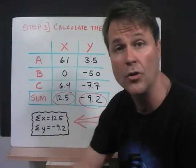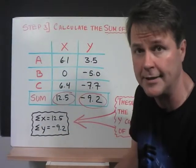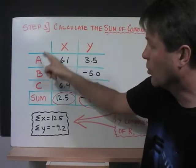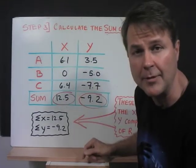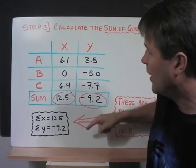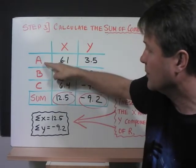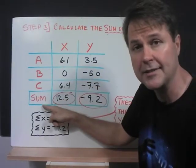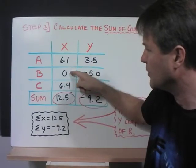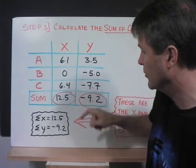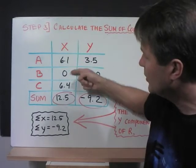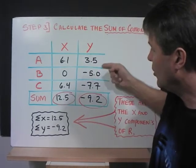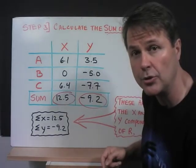So now that we've calculated all the components, we need to organize them. So step three, calculate the sum of the components. To organize, I recommend drawing a table. Table has columns for X and Y values. And then we have rows, one row for vector A, one for B and C, and then calculating the sum. So transfer the answers that you calculated earlier into the table. Add up all the X's and we get 12.5. Add up all the Y's and we get negative 9.2.